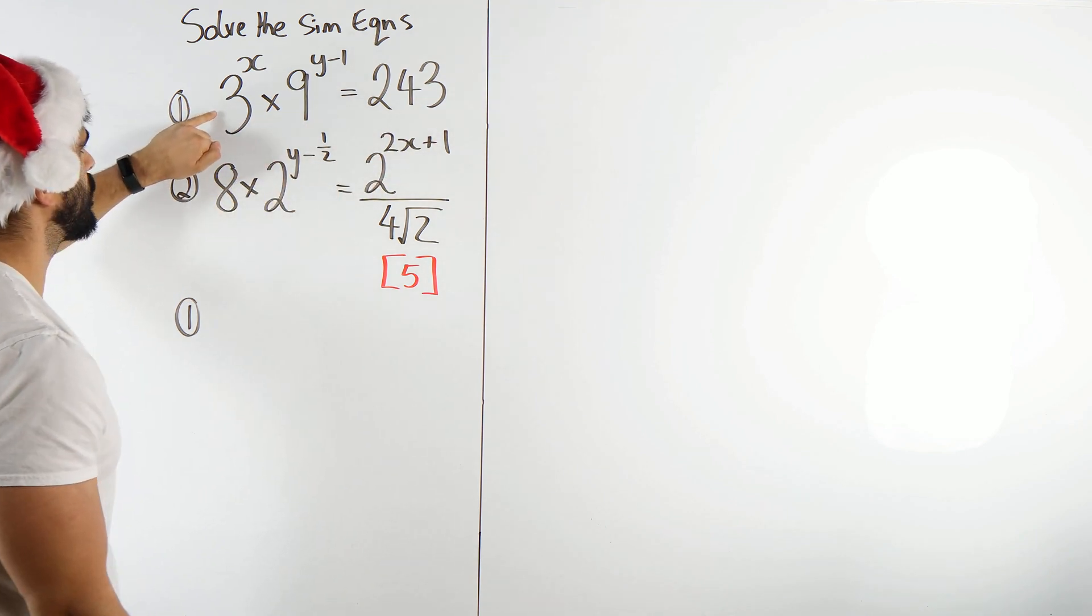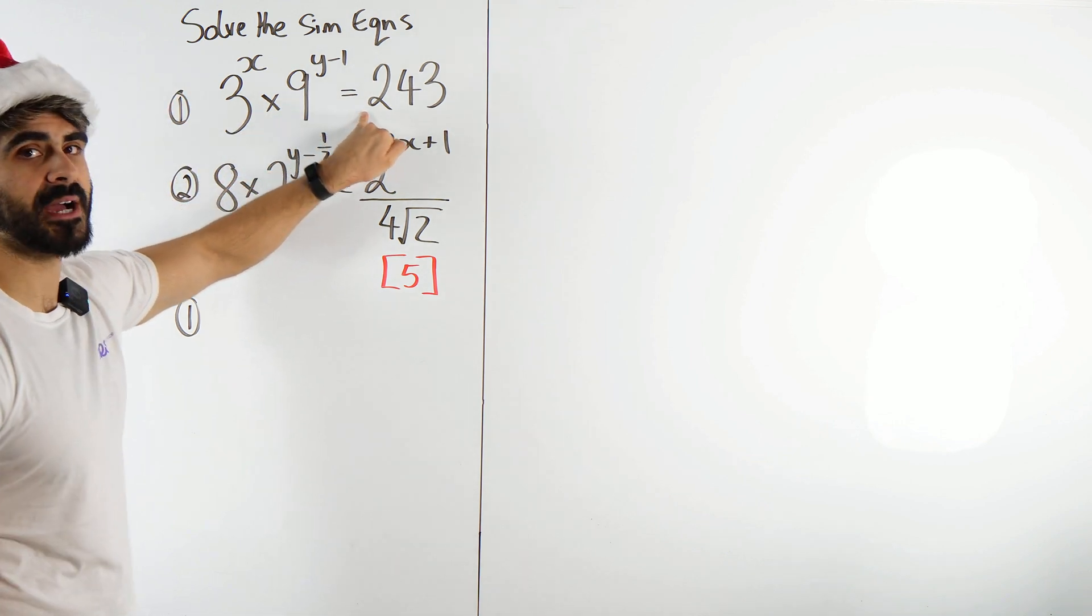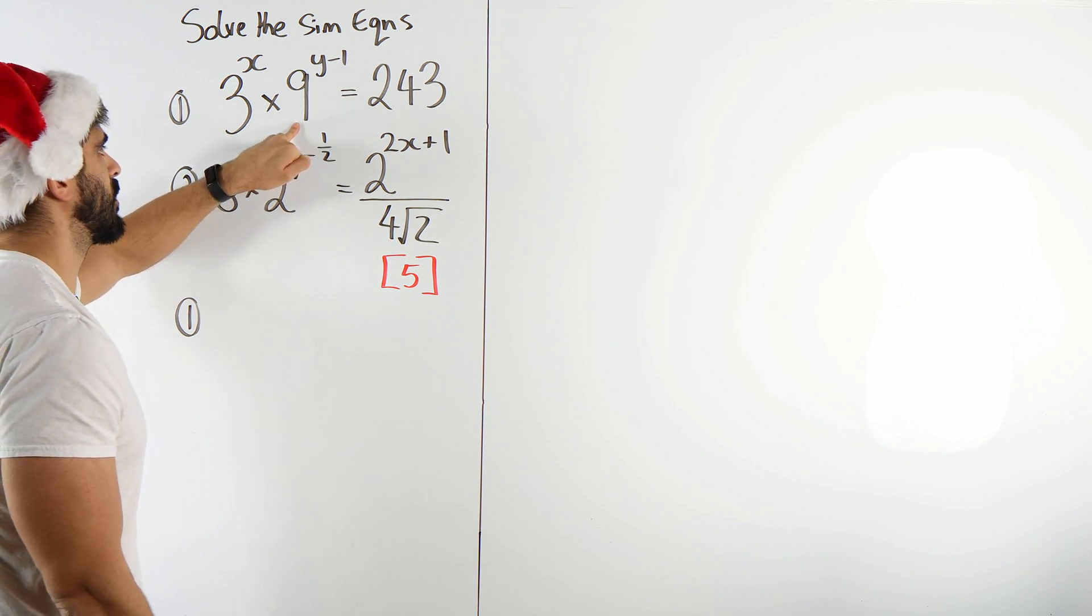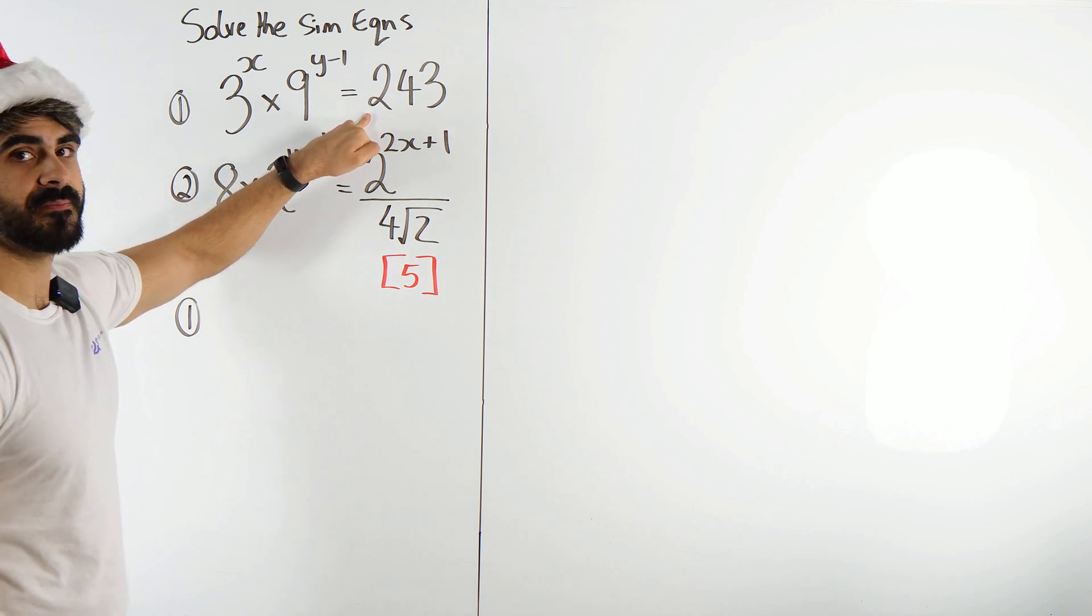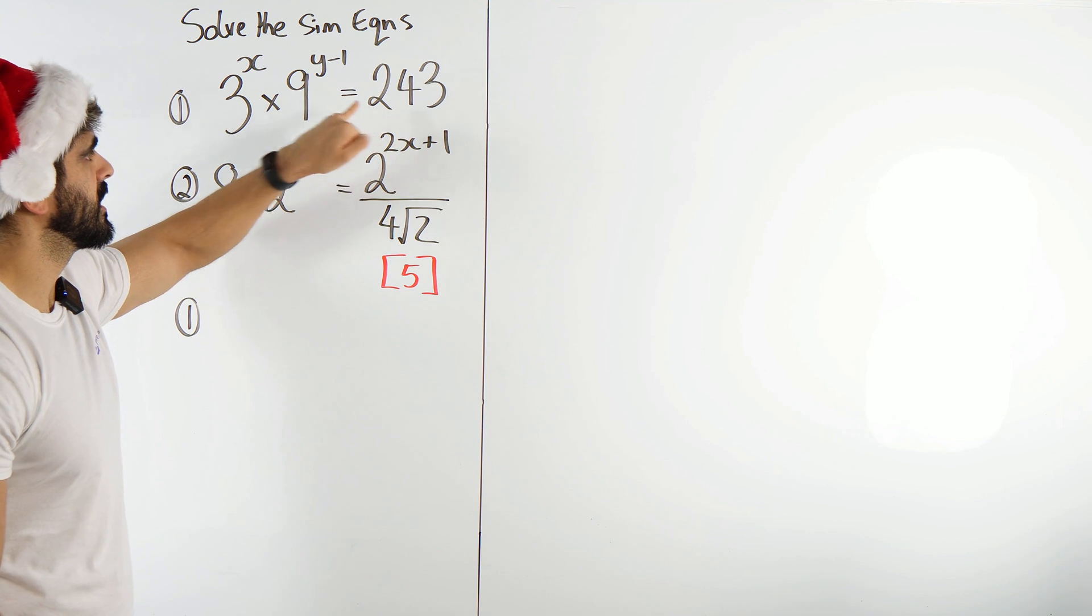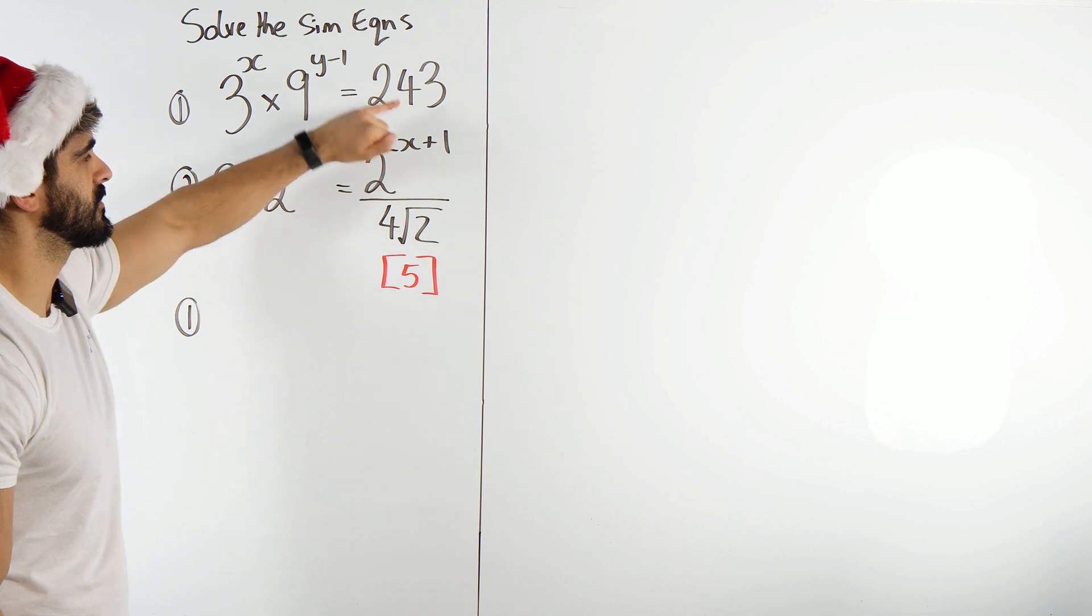Now what you notice, all of these numbers, the base numbers, they're all powers of 3. 3 is just 3 to the power of 1, nothing happens there. 9 is 3 squared. 243, or 81 is 3 to the power of 4, so this is 3 to the power of 5. 81 times 3 gives you this.